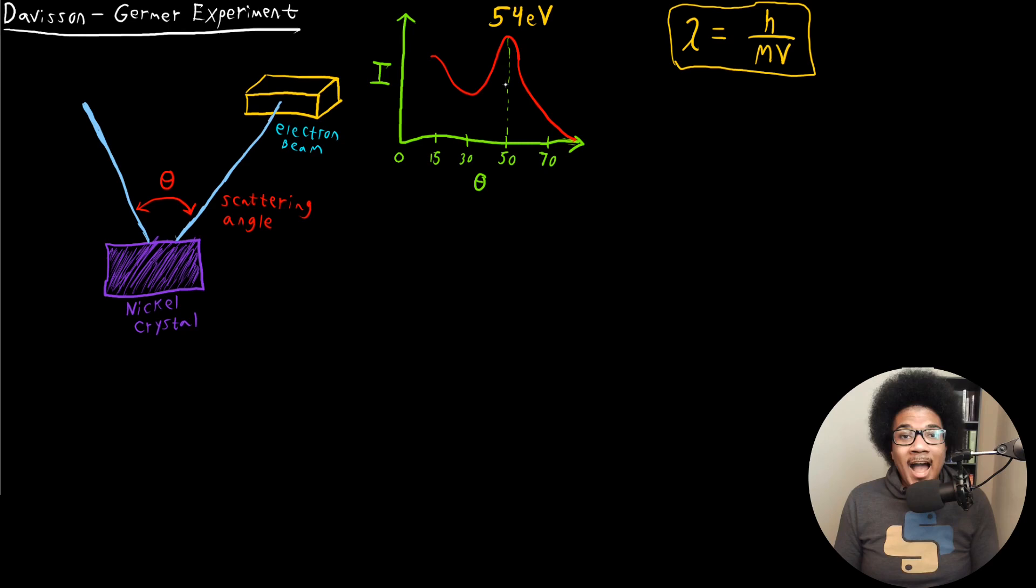So we have a particle that has a kinetic energy of 54 eV. And based on the scattering pattern, they determined that the wavelength of that particle was 0.165 nanometers. So this was the wavelength of the moving particle.